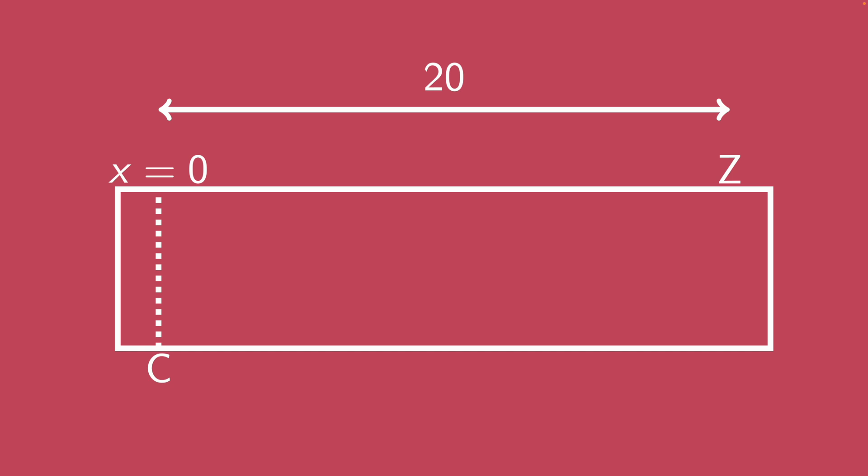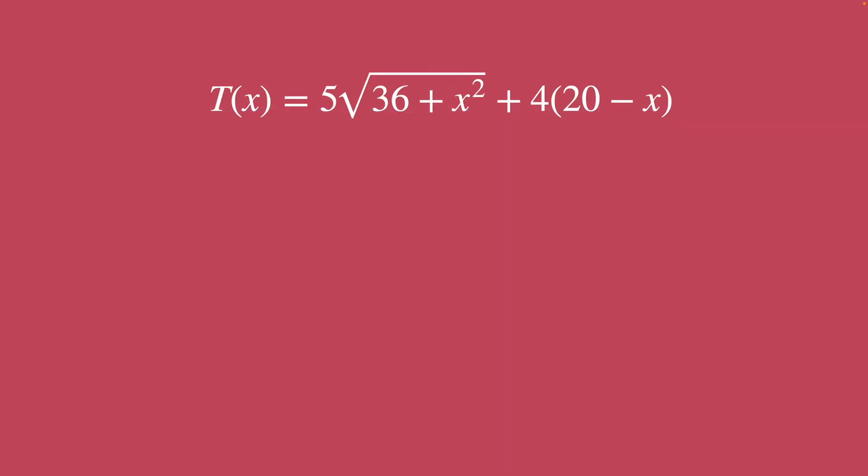And so now our second question asked us to find how long it took when the croc did as little swimming as possible, or equivalently, as you see in this graph, when X is zero. And so again, we're just using our OG formula for T of X, we plug in X as zero, and we get exactly 110.